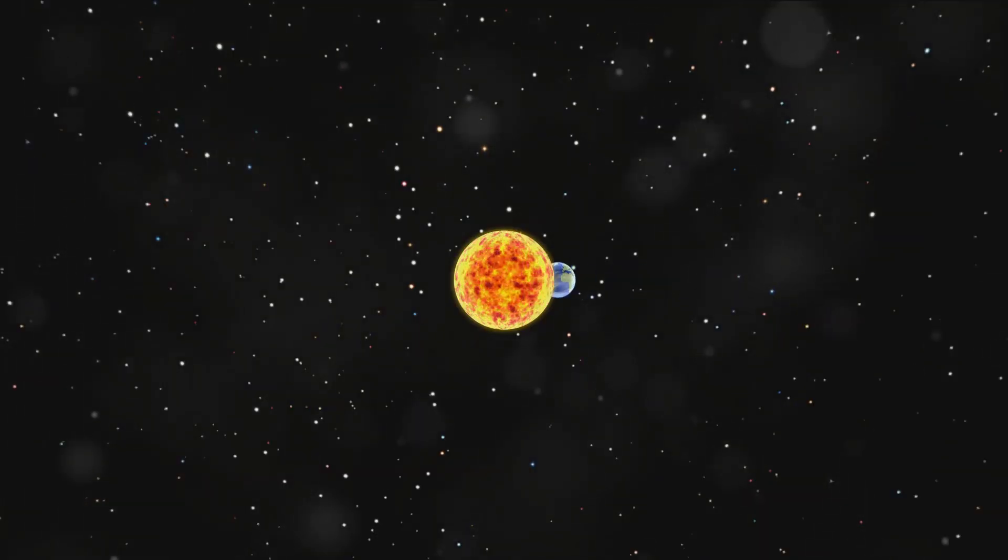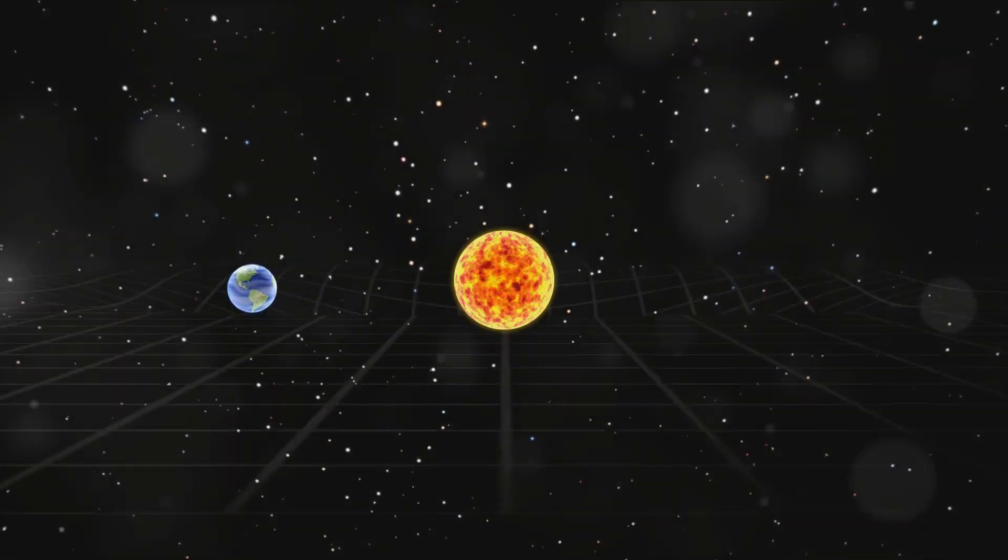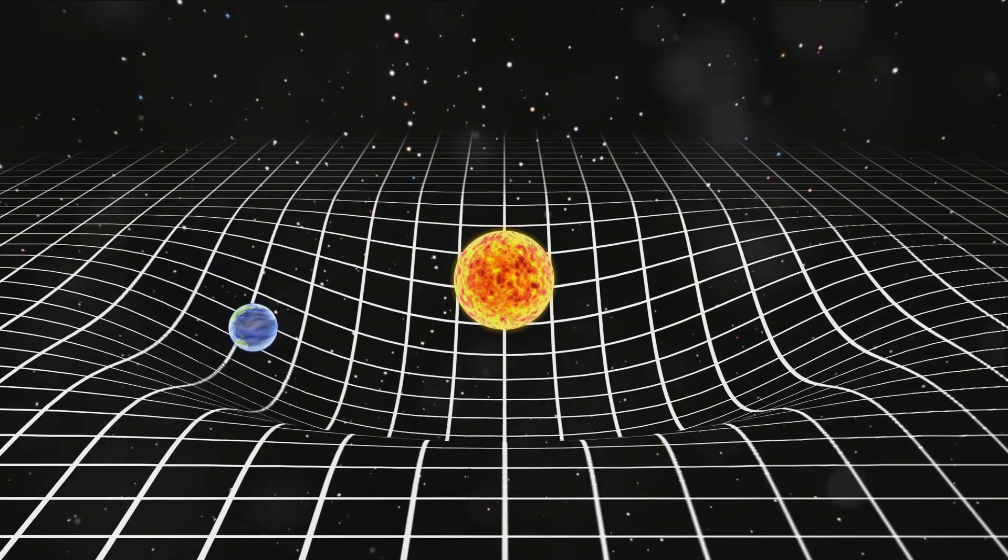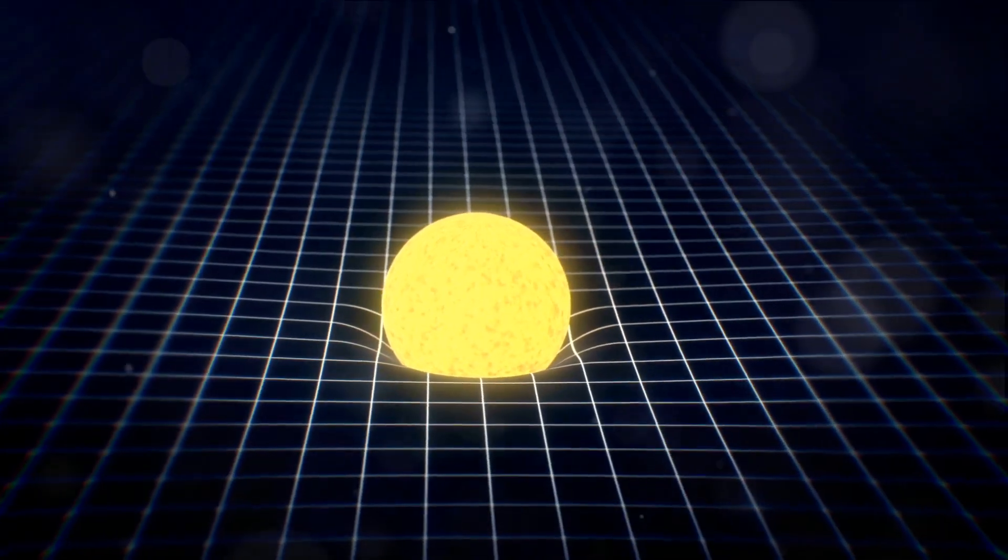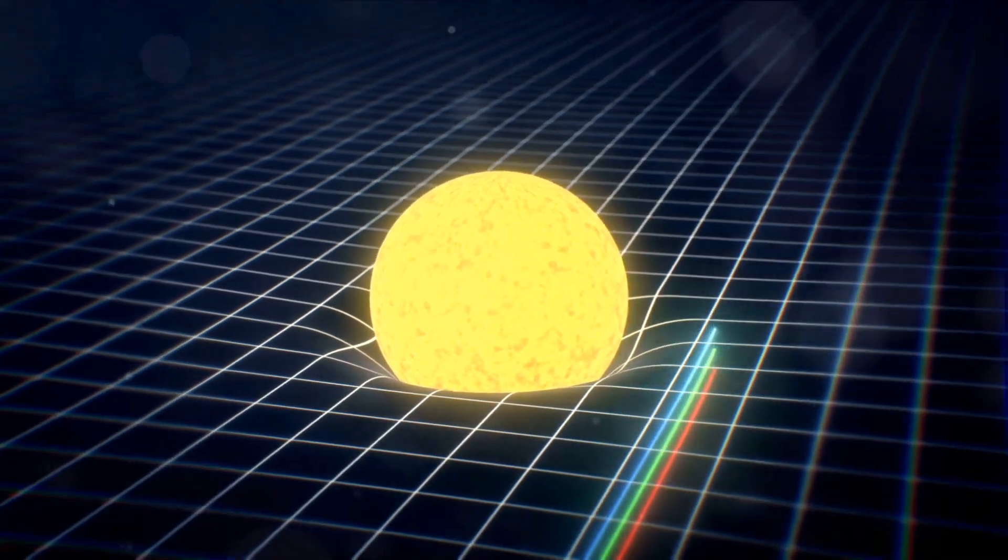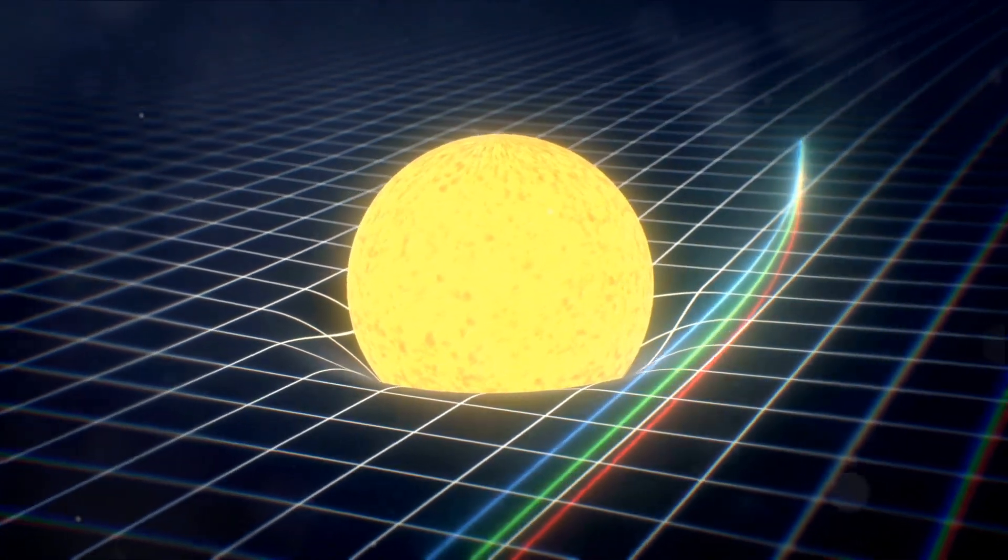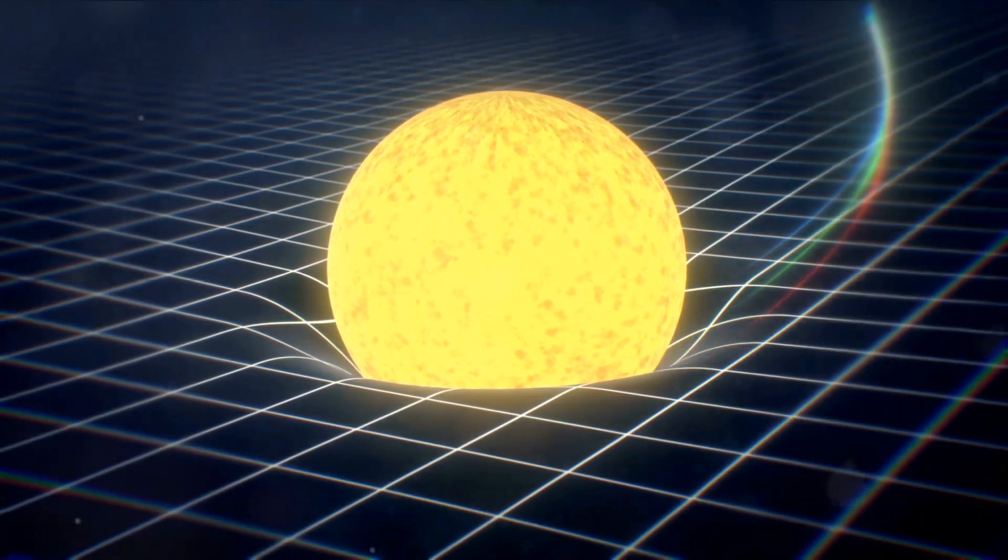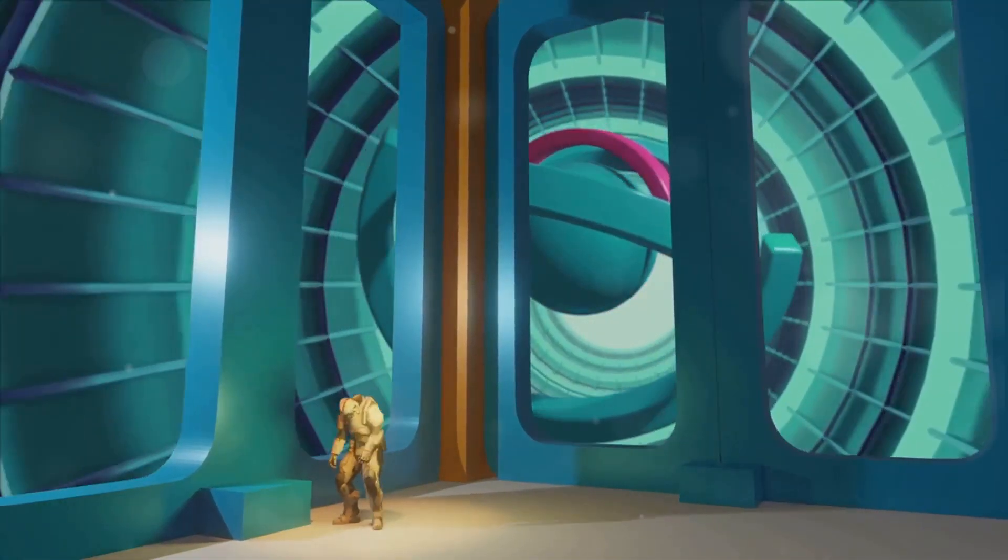Einstein's theory tells us that this fabric can be warped and twisted by the mass and energy within it. So the planets, stars, galaxies, and everything else in the universe are not just floating in space, but are moving along curves in space-time. This curvature is what we experience as gravity.